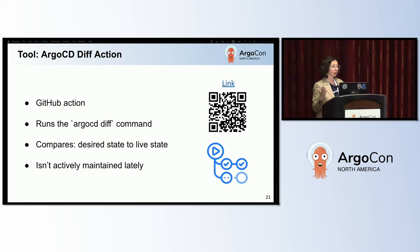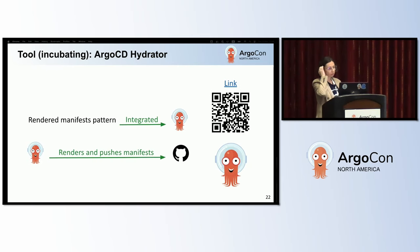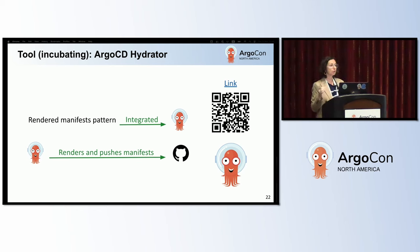Argo CD diff action is a GitHub Actions tool. It runs the Argo CD diff command against a live Argo CD and compares desired state to live state. This tool isn't actively maintained lately. The incubating Argo CD Hydrator tool is based on the rendered manifest pattern integrated into Argo CD, and Argo CD renders and pushes the full plain manifests to Git. This approach has all the pros of the rendered manifest approach and also tackles some of the cons because of the native Argo CD integration. Michael Crenshaw and Zach Aller gave a talk about it earlier today.